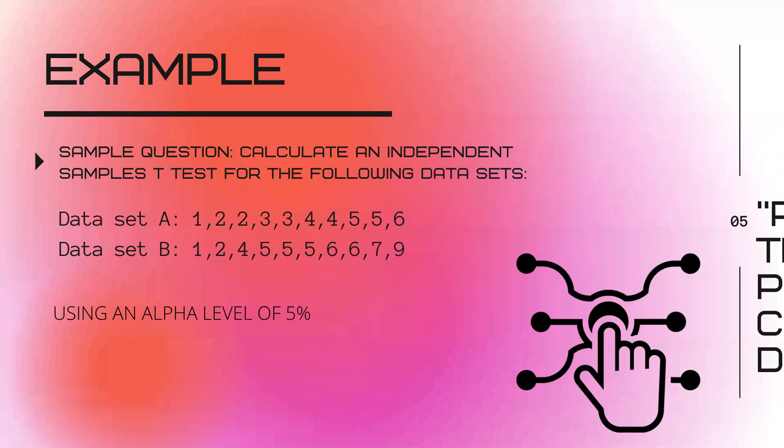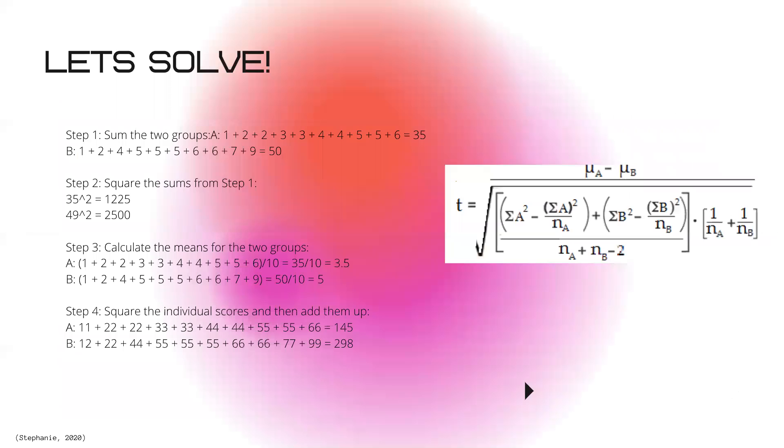Now we have an example. We're going to calculate an independent sample T-Test for the following data sets. We're using this T-Test from StatisticsHowTo.com and we're going to use an alpha level of 5%. We are solving by hand, not using SPSS software.